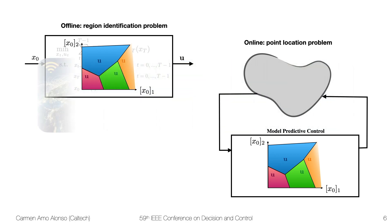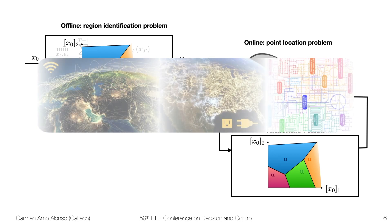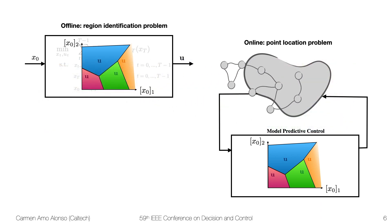However, as I discussed in my earlier talk, these days we're dealing with a different kind of applications and these are large-scale networks. In those cases, explicit MPC does not perform as well because the offline problem usually becomes intractable due to a large number of regions, and even if we were able to compute all those regions, the point location problem is computationally really expensive.